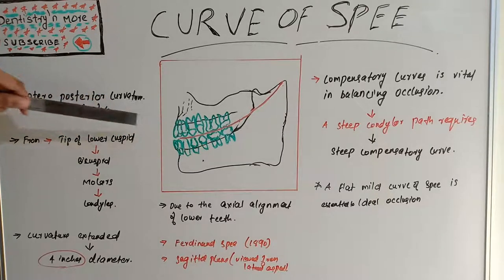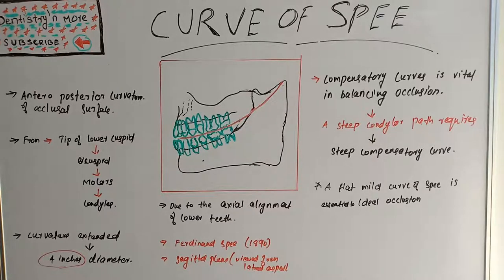When the protrusive movement happens, an opening takes place in the posterior region of mandible. This opening is because of the effect of condylar inclination.